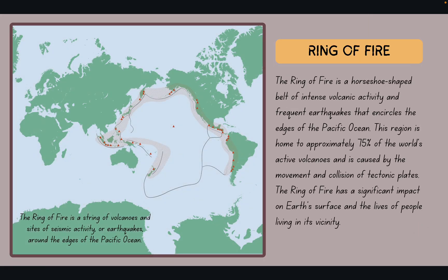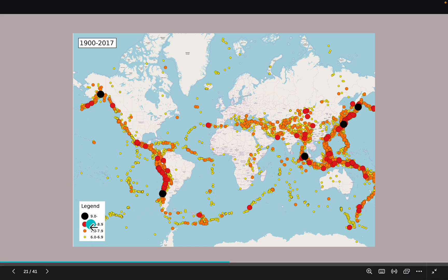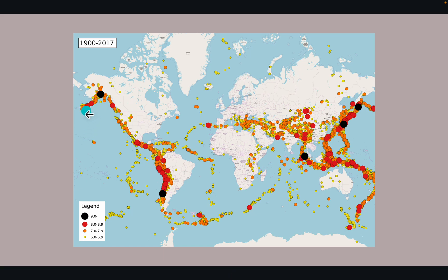Before we get in, we have to talk about the Ring of Fire, which is a string of volcanoes and sites of seismic activity or earthquakes around the edges of the Pacific Ocean. You can see this horseshoe-shaped belt with really intense volcanic activity and frequent earthquakes. This region is home to approximately 75% of the world's active volcanoes and is caused by the movement and collision of tectonic plates. I'm going to show you a map here — you can see clearly through the legend, red and black being the most severe, through the Pacific Ring of Fire.